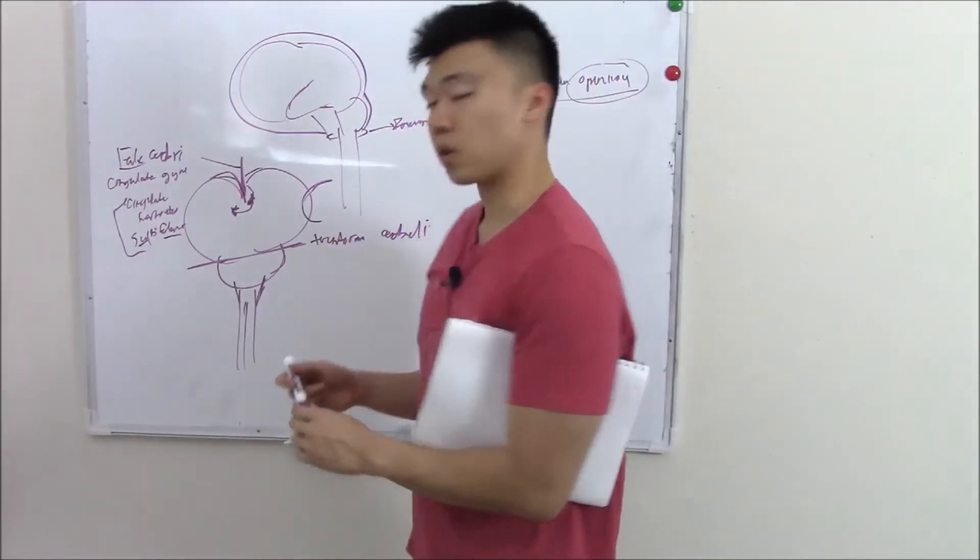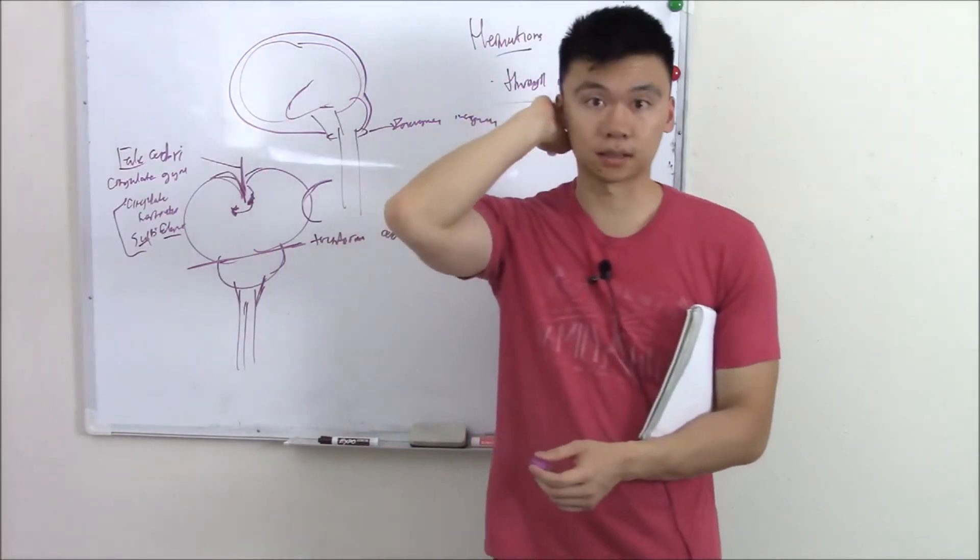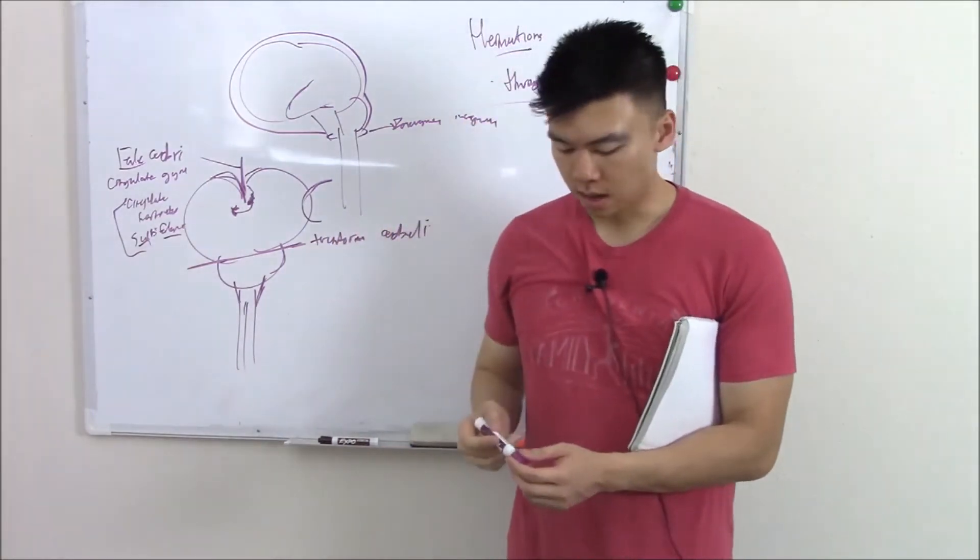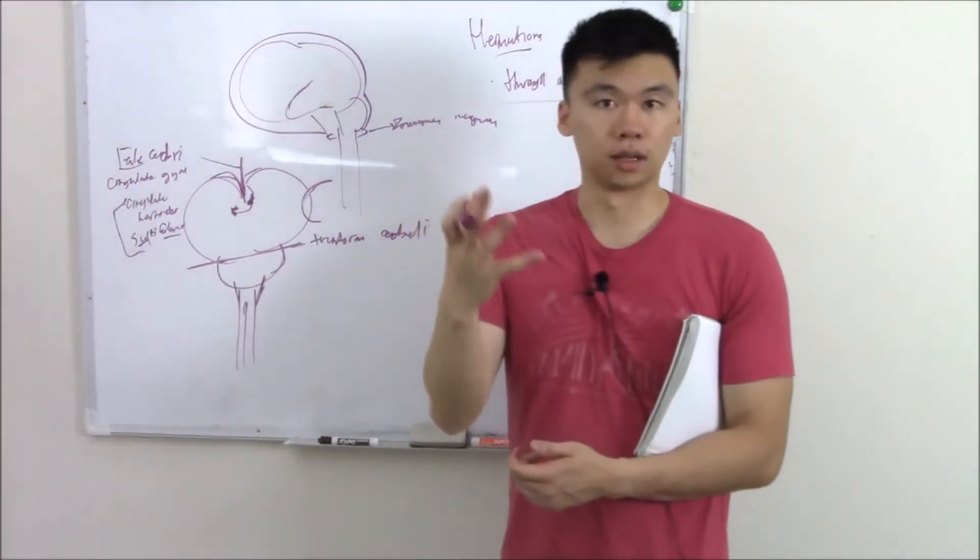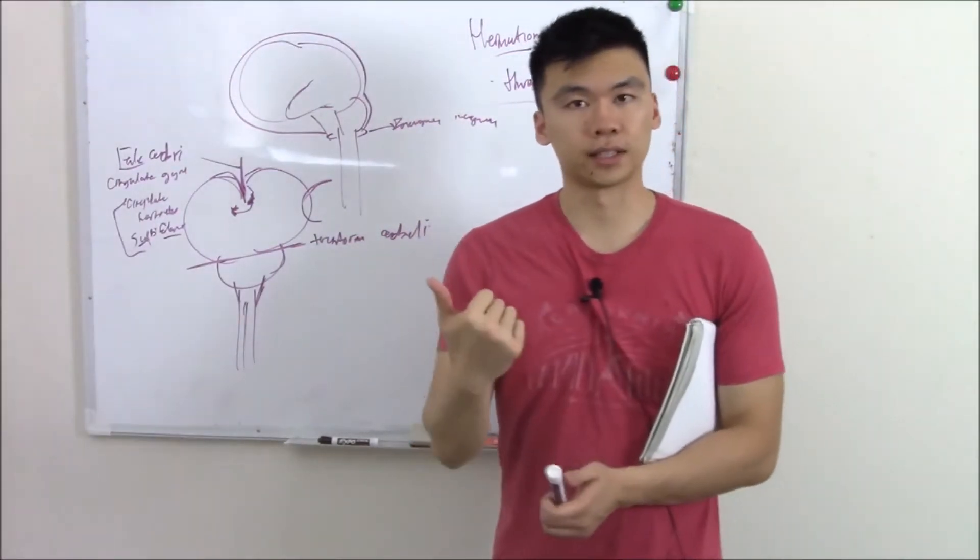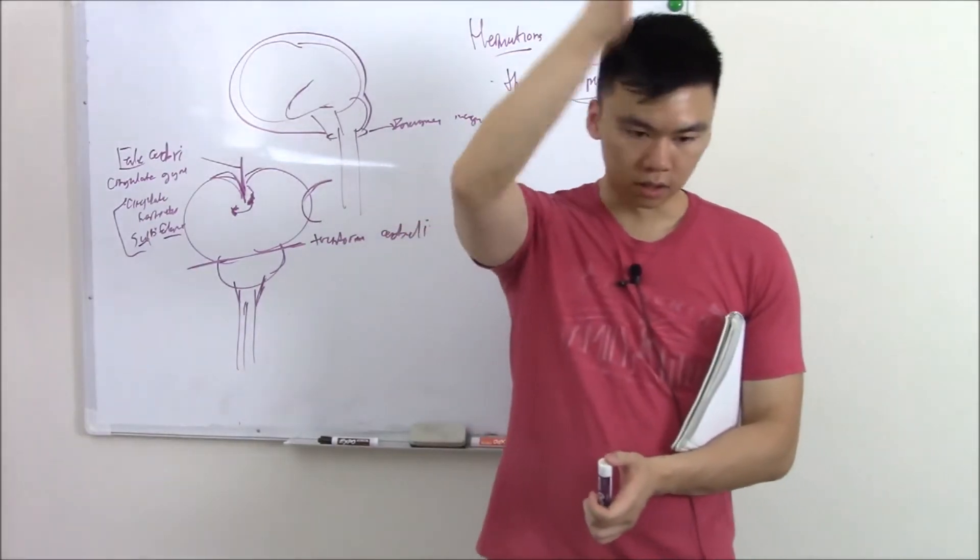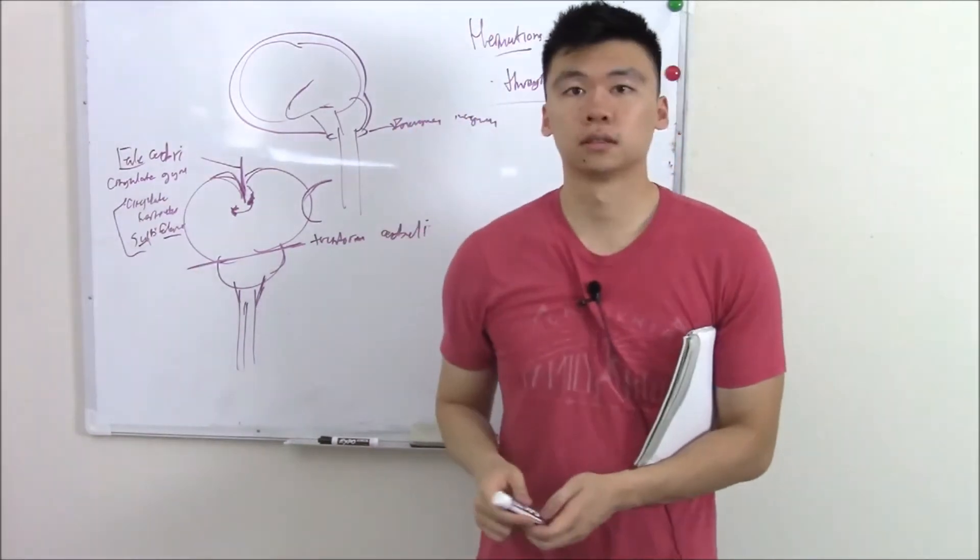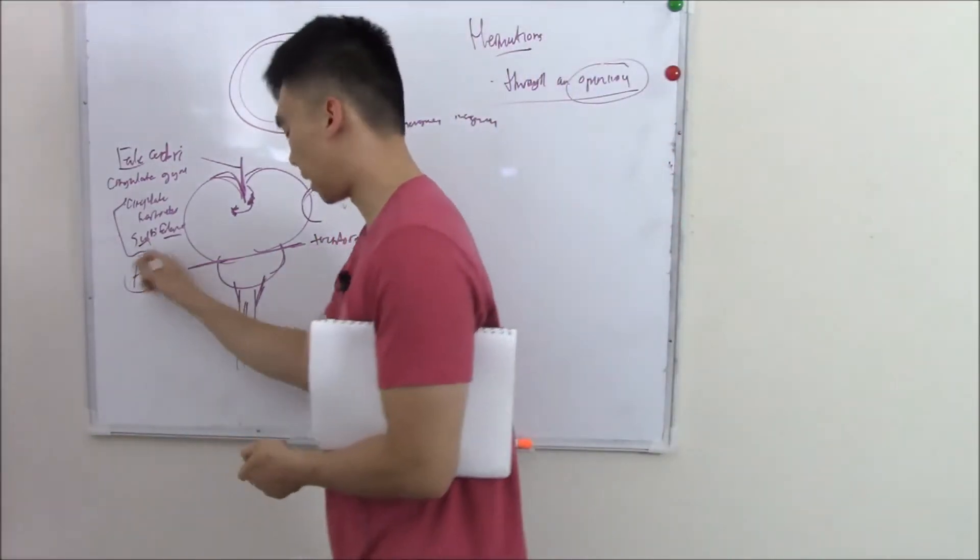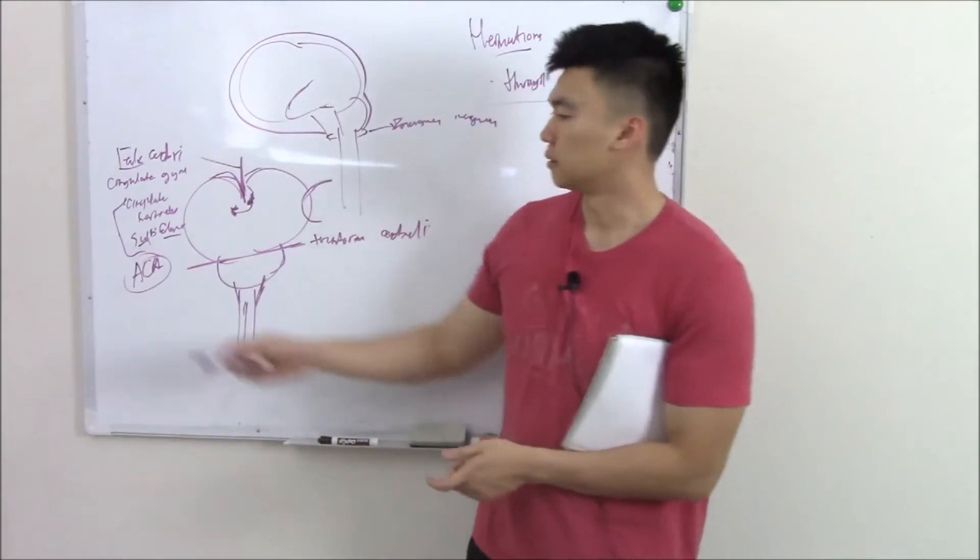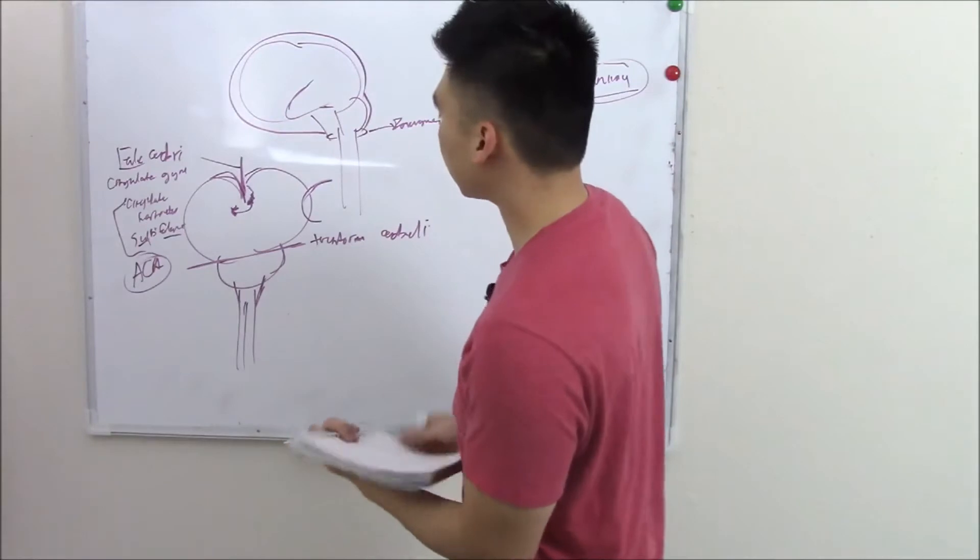This is one of the more milder but more common ones. When it goes under the falx, what can it compress? There are three arteries that supply blood to your brain: anterior, middle, and posterior cerebral artery. What artery goes right through the hemispheres? That'd be your ACA. So it can compress the ACA and cause loss of blood distribution in your ACA areas.